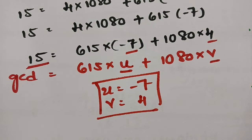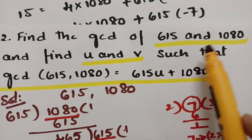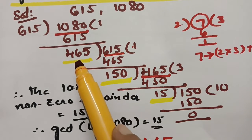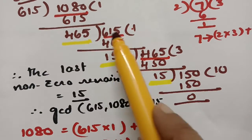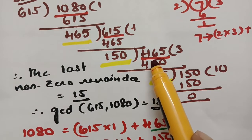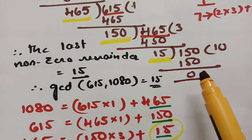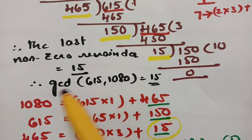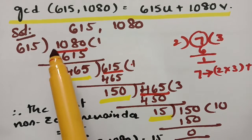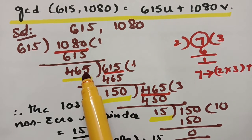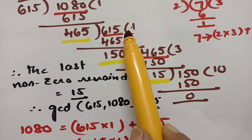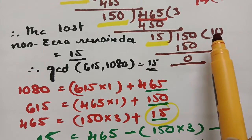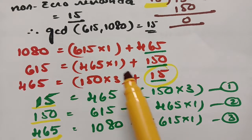This is how we find the values of U and V — it is simple. First find the GCD by simple division: bigger divided by smaller, collect remainders, continue until remainder is 0. The last non-zero remainder is the GCD. From the division, we got: 1080 = 615·1 + 465; 615 = 465·1 + 150; 465 = 150·3 + 15; 150 = 15·10.